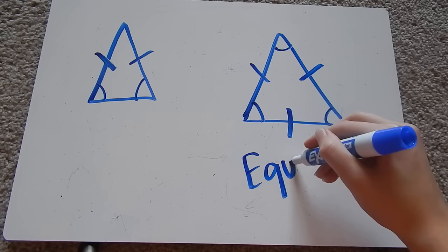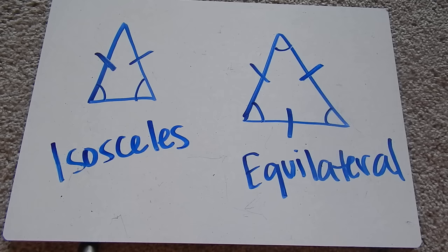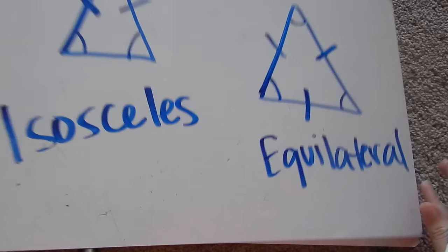So this is the equilateral triangle theorem, and this is the isosceles triangle theorem. Again, if you have two or three congruent sides, the angles opposite of the sides will also be equal.